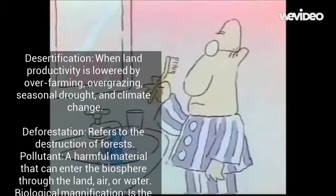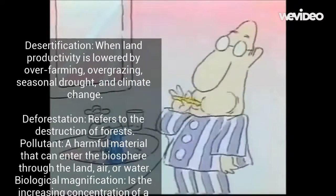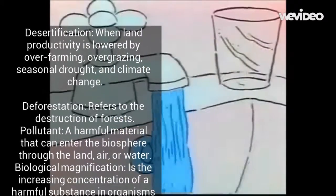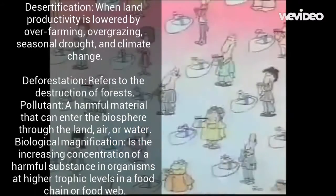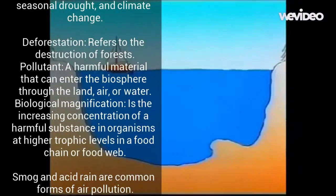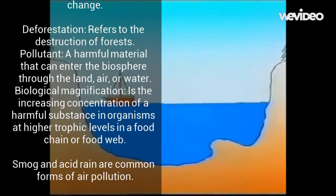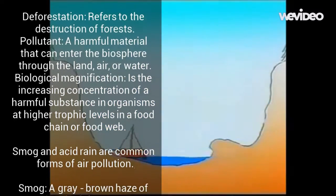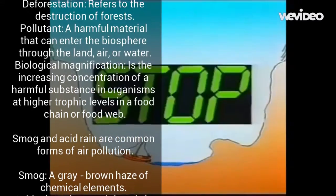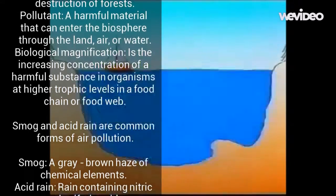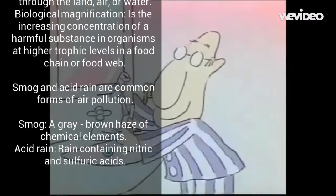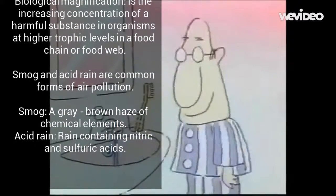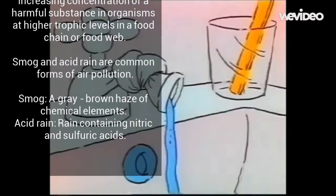Deforestation refers to the destruction of forests. A pollutant is a harmful material that can enter the biosphere through the land, air, or water. Biological magnification is the increasing concentration of a harmful substance in organisms at higher trophic levels in a food chain or food web.